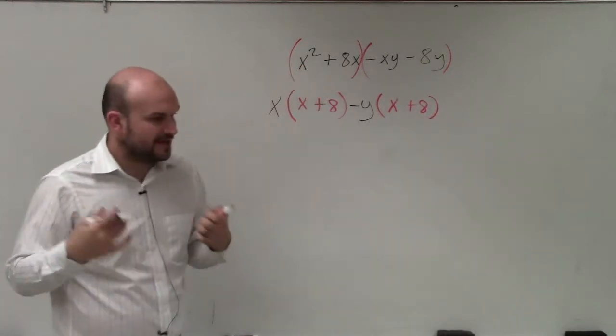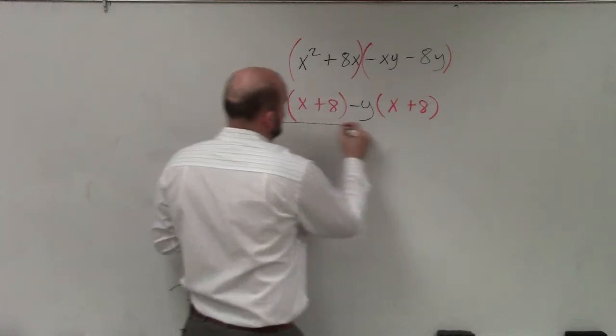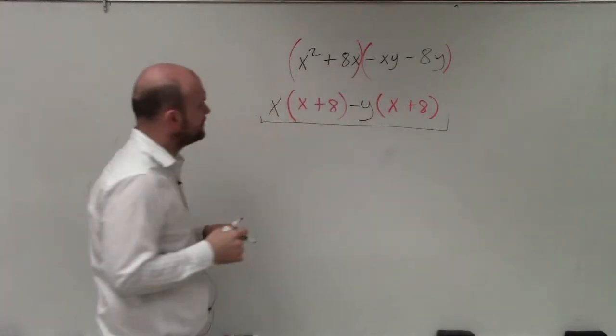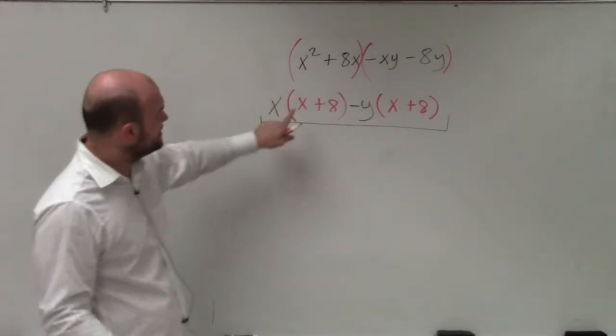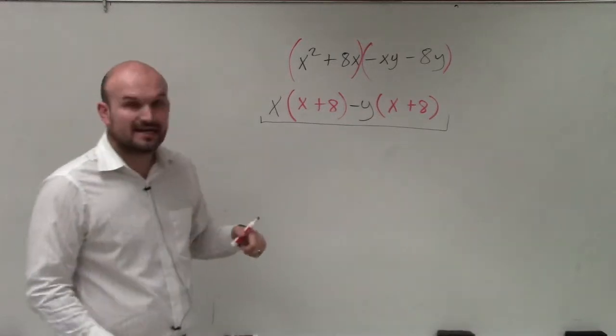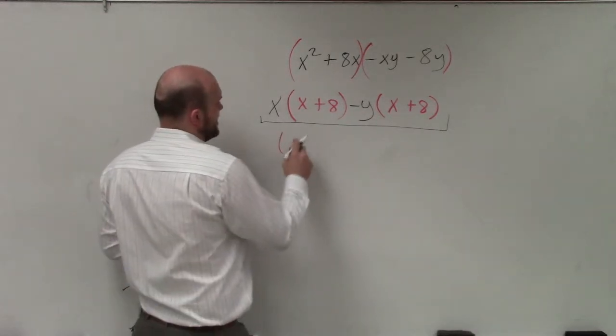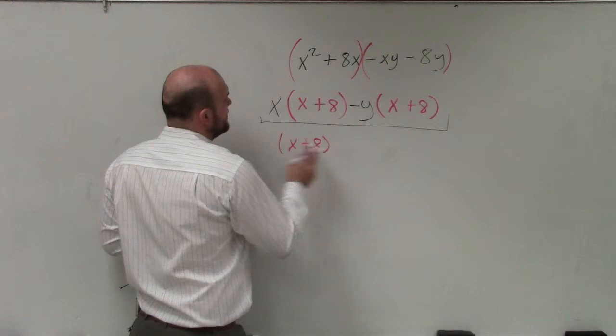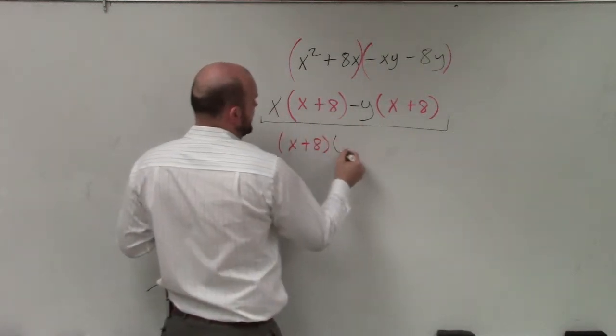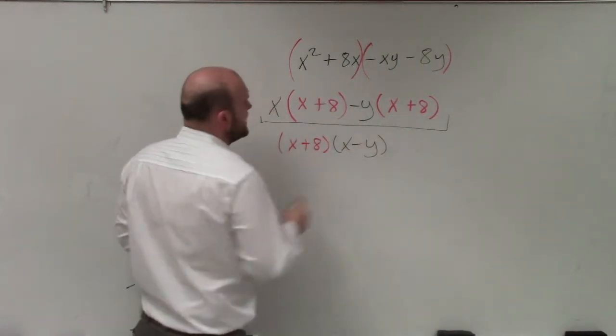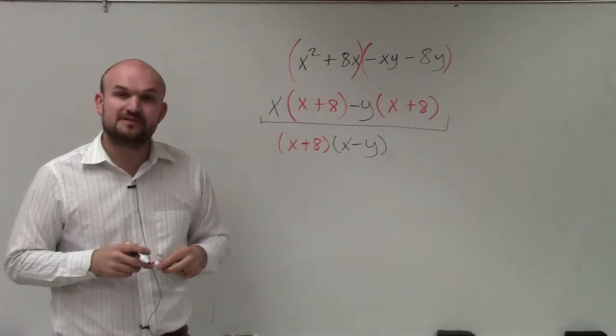So now what we do is now we take out, factor the GCF out of the whole expression together. And you can see that they both share this red x plus 8 expression. So I'm going to factor out x plus 8. And then left over is I have x minus y. And now that is my factored form of this polynomial.